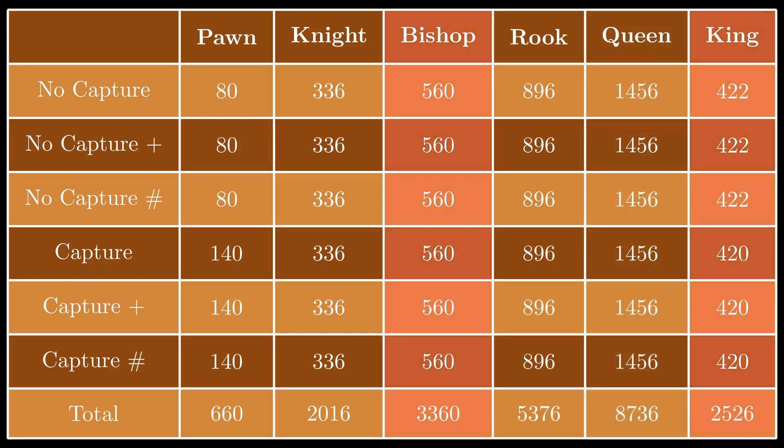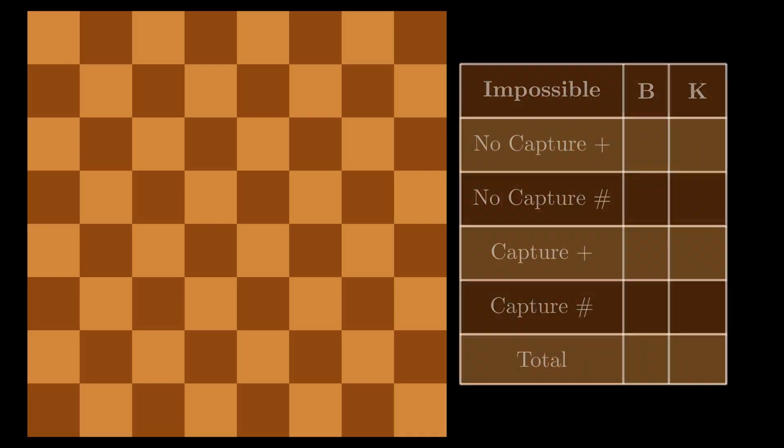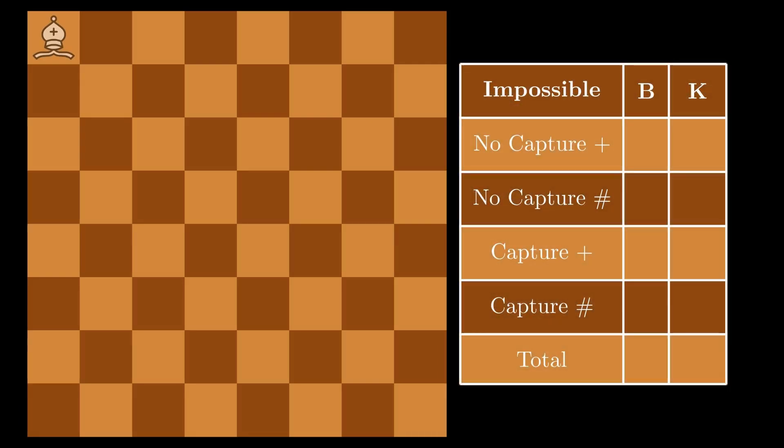The problem with the bishop and king is that, while all of the regular moves or captures are possible, they cannot always be played with check or checkmate. Let's find these impossible moves beginning with the bishop. While nobody puts baby in a corner, you may find your bishop in one. From any of them you cannot move the bishop to the other corner and put your opponent in check or checkmate directly or via discovery. This is true whether or not you capture, so from each corner there are 4 impossible moves. This reduces the set size by 16.